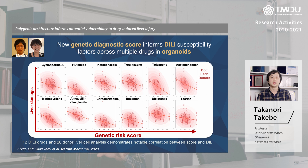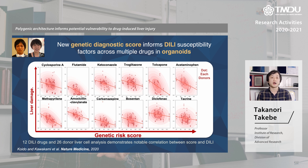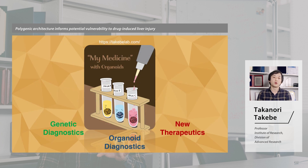We used this to study a number of different donor-dependent consequences after drug exposure. From our experiments, we found that our genetic risk score can inform the potential side effects across multiple different donors. This simply suggests that if a patient has a higher genetic risk score, they are more likely to exhibit drug-induced liver damage.